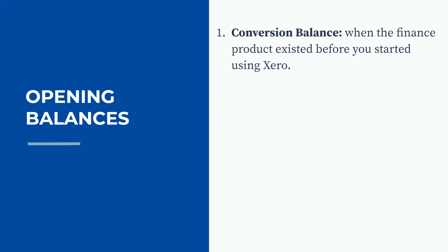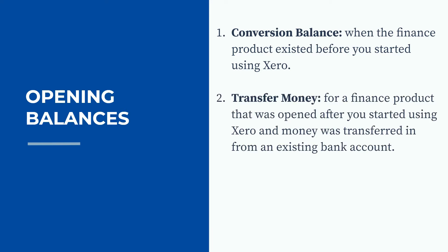The first way is through a conversion balance, and you would use this when the finance product existed before you started using Xero — typically when you convert from another piece of accounting software. The next way is through a transfer money transaction, and that's for a finance product that was opened after you started using Xero and you transferred money in from another bank account.